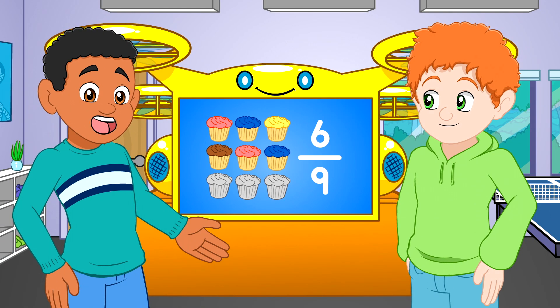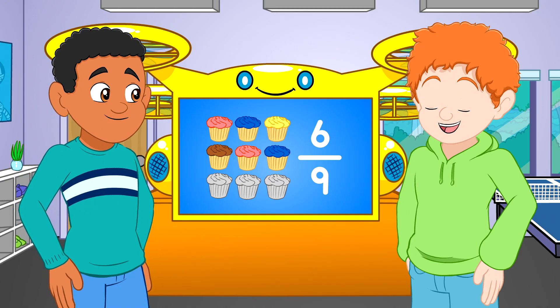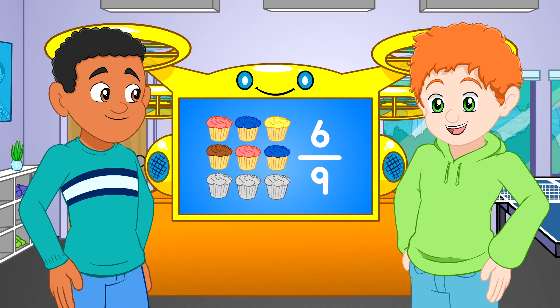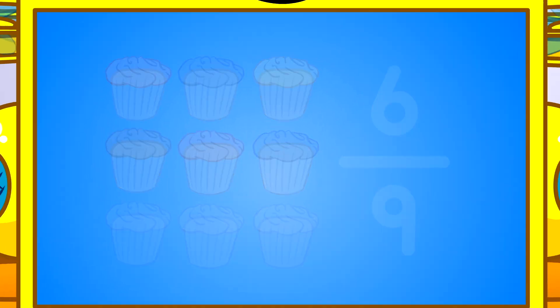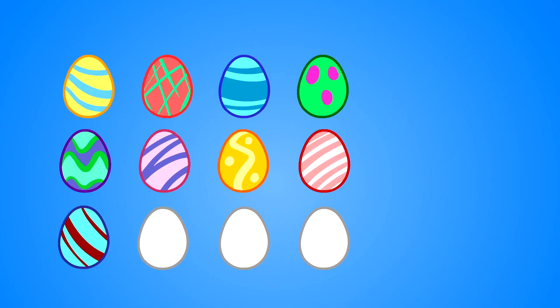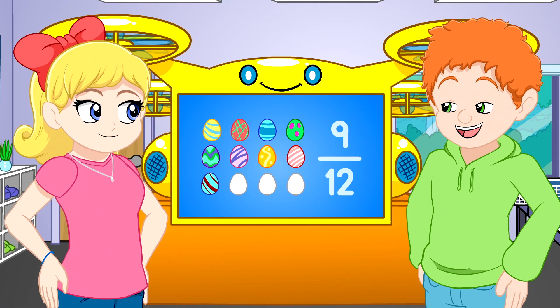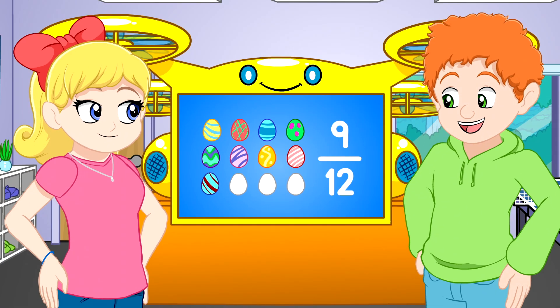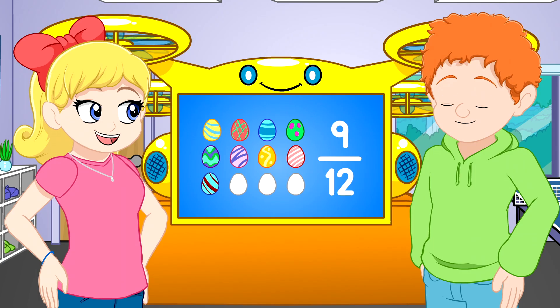Six-ninths of the cupcakes are in color and even look good enough to eat. I'd like a chocolate one. Nine-twelfths of these eggs have been colored. We'll finish dying the rest of them later.